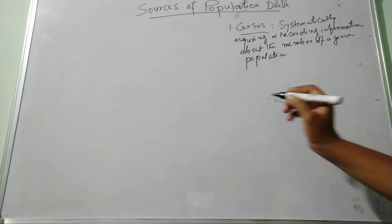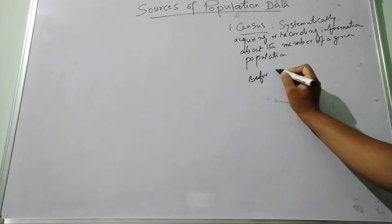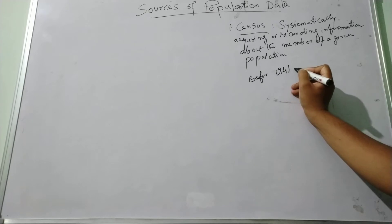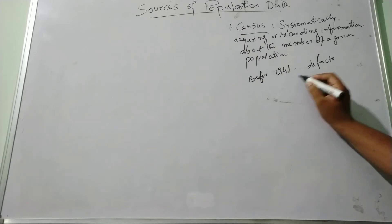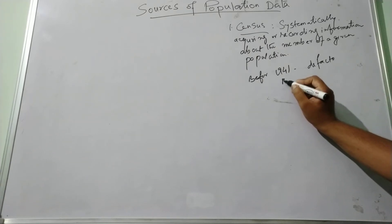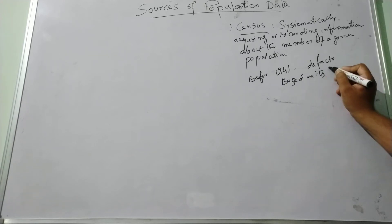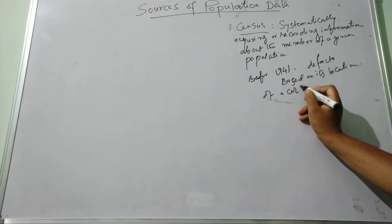Before 1941, the enumeration system of the population is the de facto. That is, population has been done with respect to the location at a certain point of time, based on its location. Population of a certain point of time.